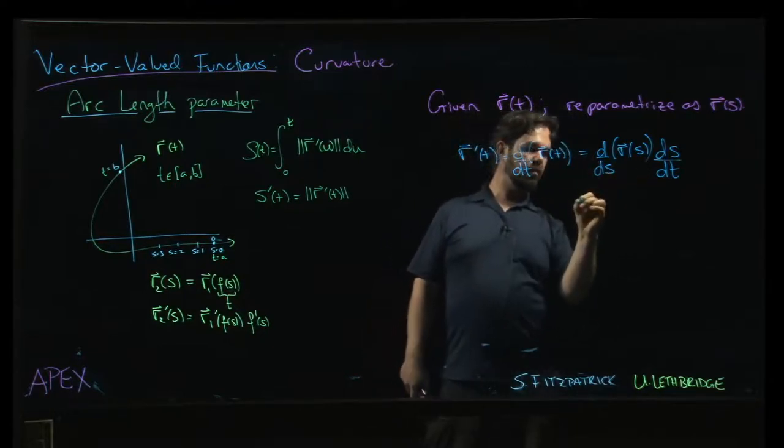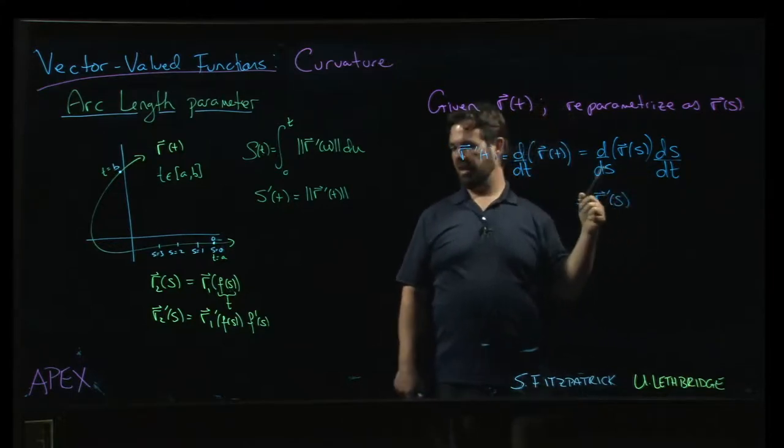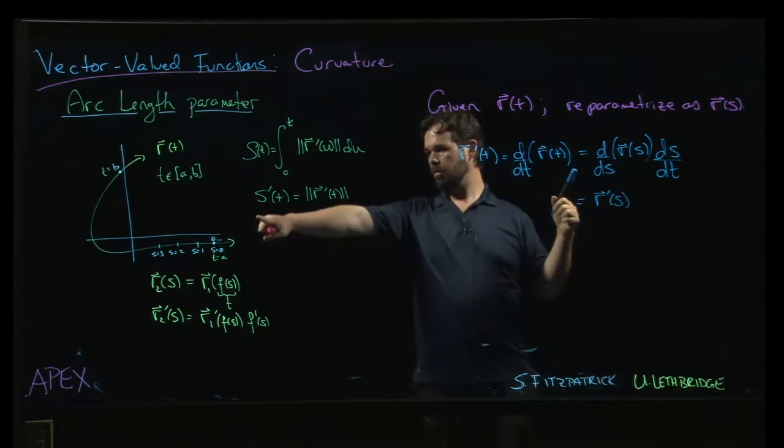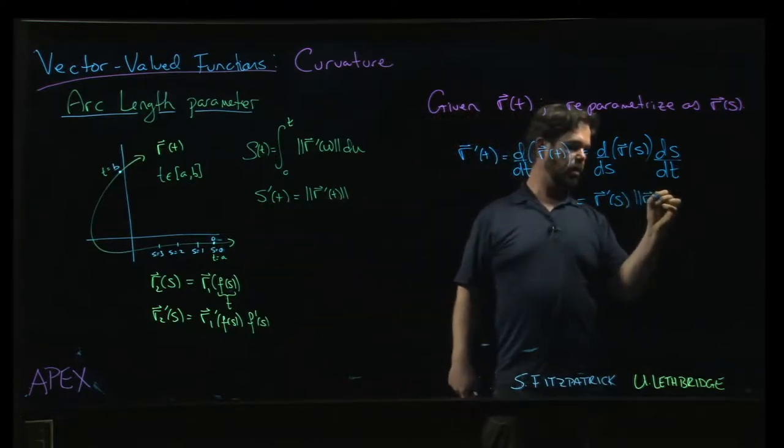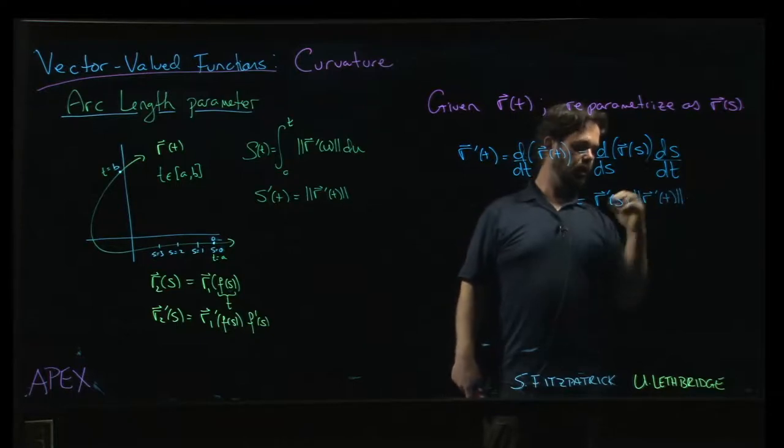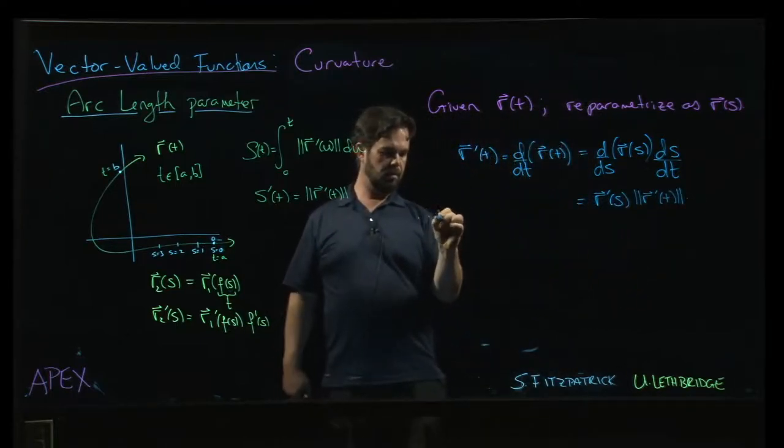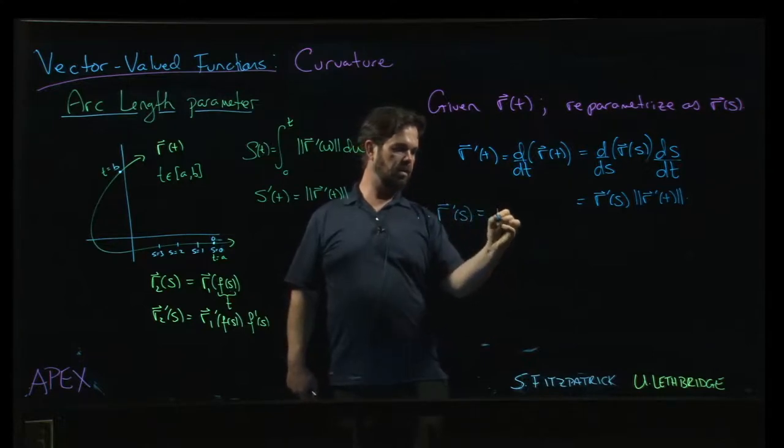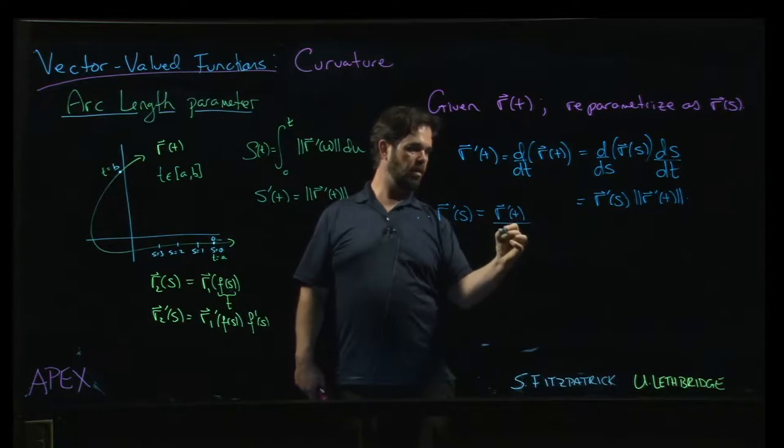So then this becomes, well, this is R prime of s, ds dt, here. It's the magnitude of R prime of t. Now, the important thing here is now we can solve for R prime of s. And we get R prime of t over the magnitude of R prime of t.